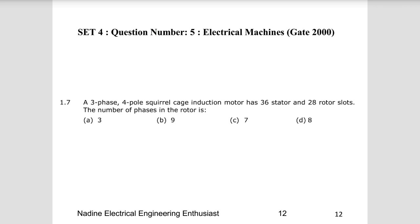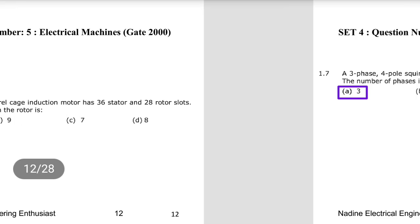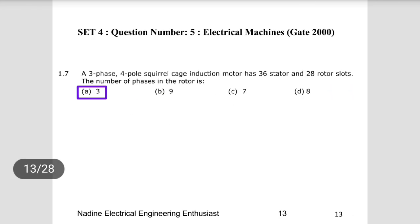Question 5: A three-phase four-pole squirrel cage induction motor has 36 stator and 28 rotor slots. What is the number of phases of the rotor? For a squirrel cage induction motor, the number of phases in the stator and rotor are the same. Therefore the answer is three — the number of rotor phases equals three.